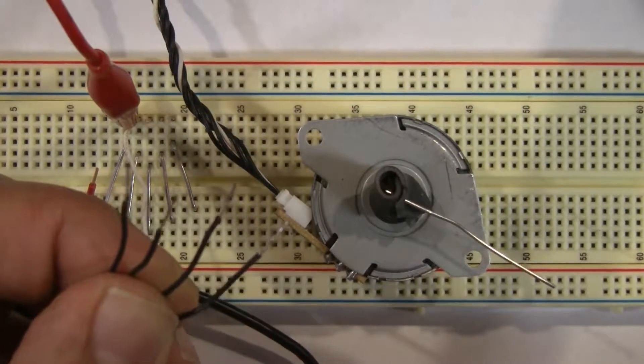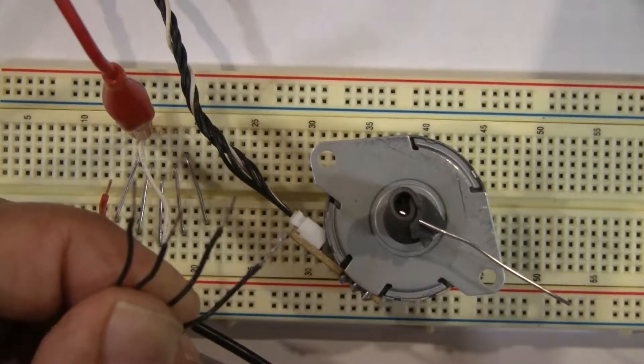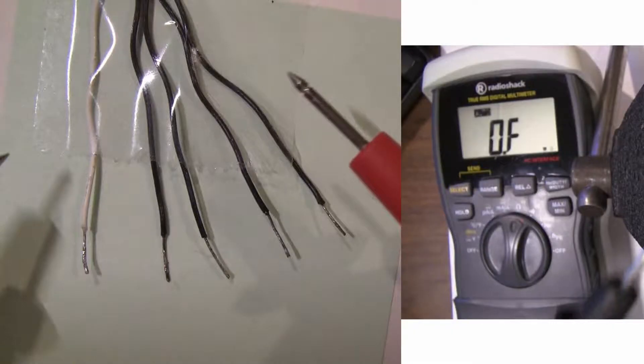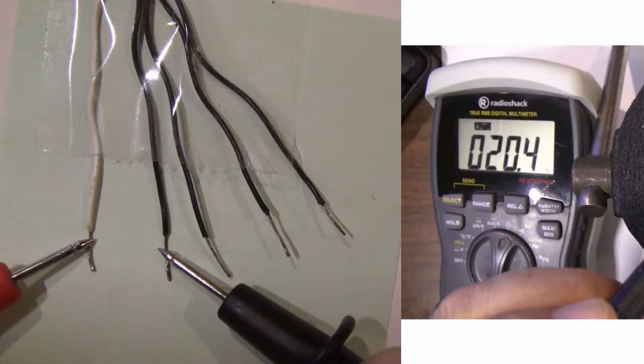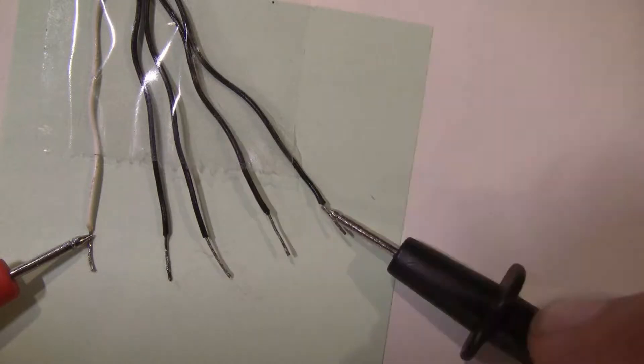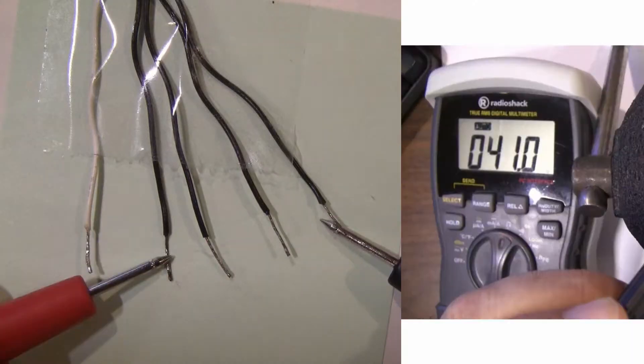Now, how to recognize which is which? First, we need a multimeter to measure ohms. If we read between the positive and ground wires, we will have half the reading compared to the read between ground to ground.